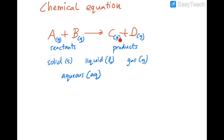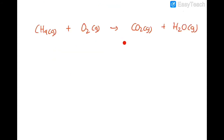Let's take a look at a real chemical equation. Here is a very common reaction from any chemistry textbook: CH4 gas, called methane, is oxidized by oxygen — or combusted — and then forms two different gases: carbon dioxide and water vapor.